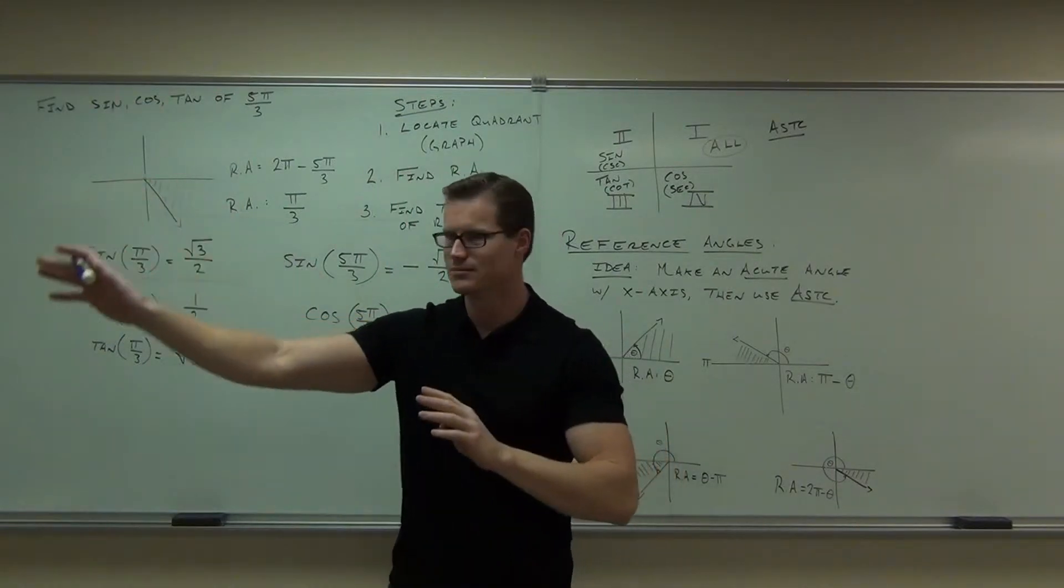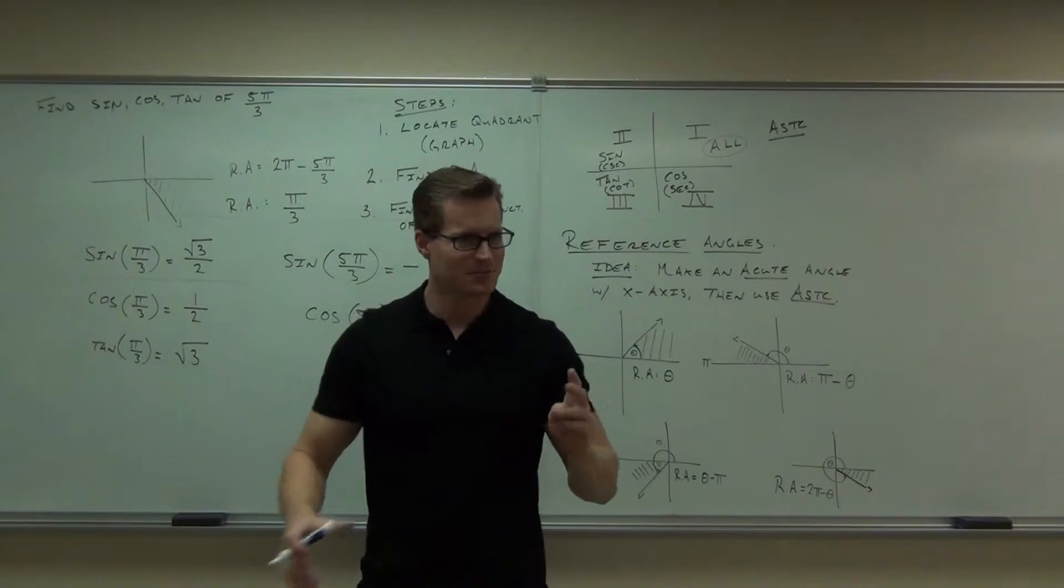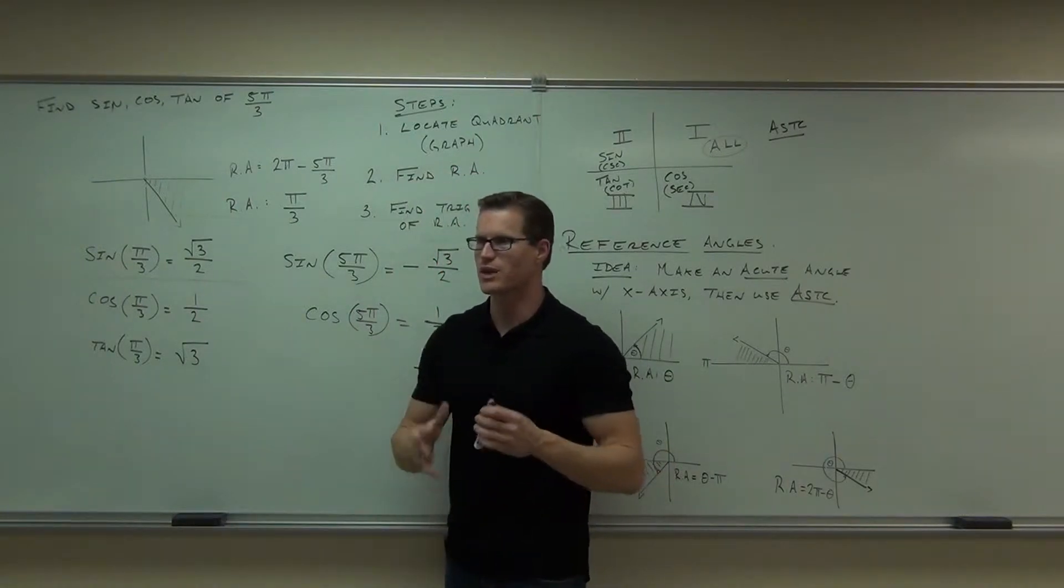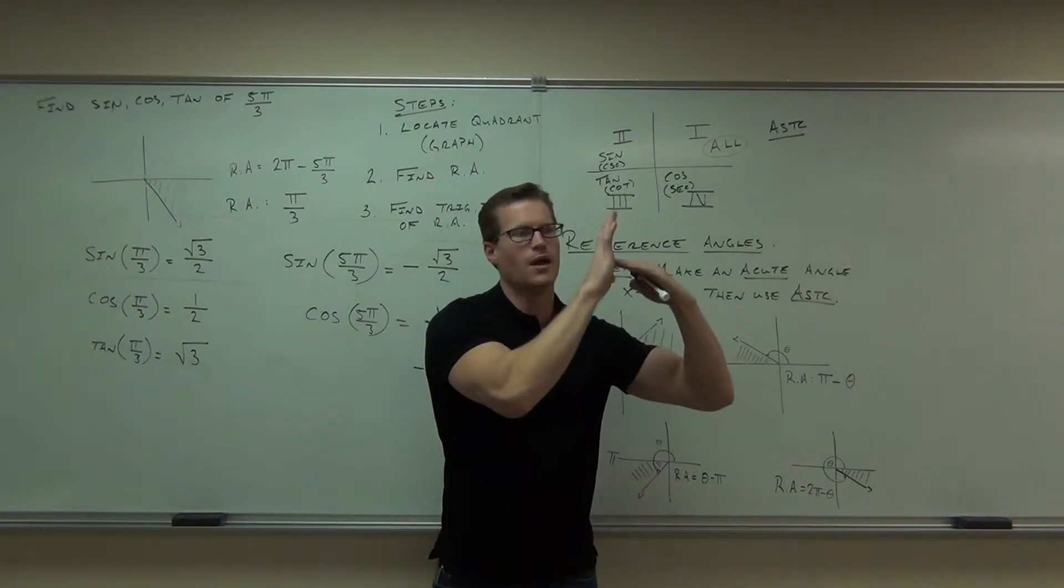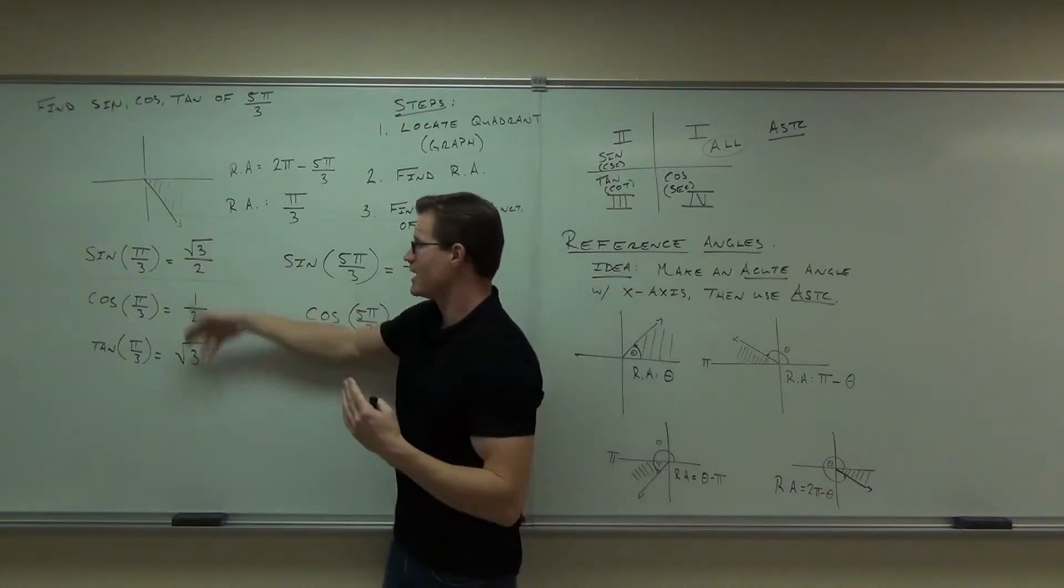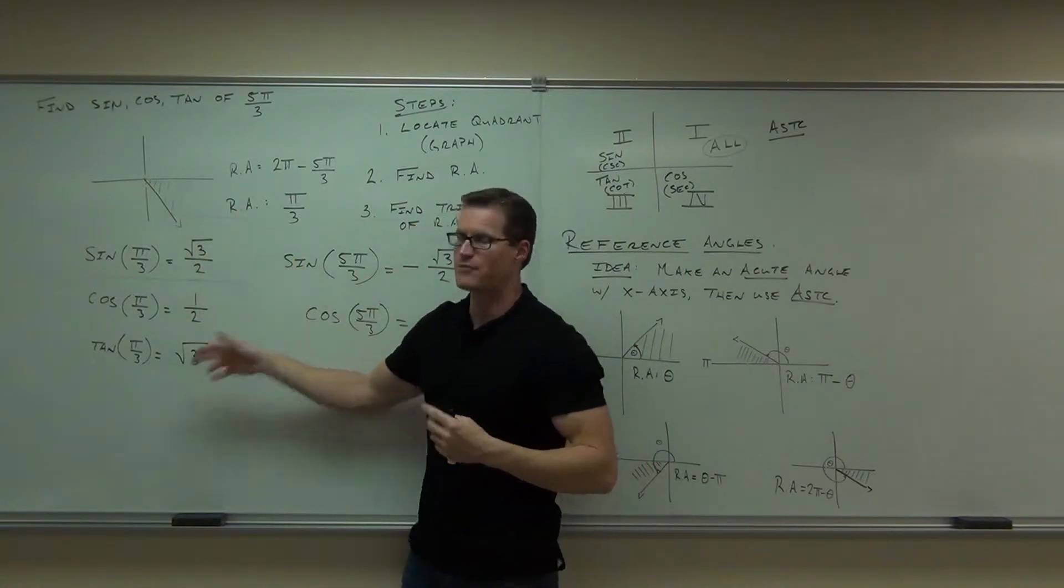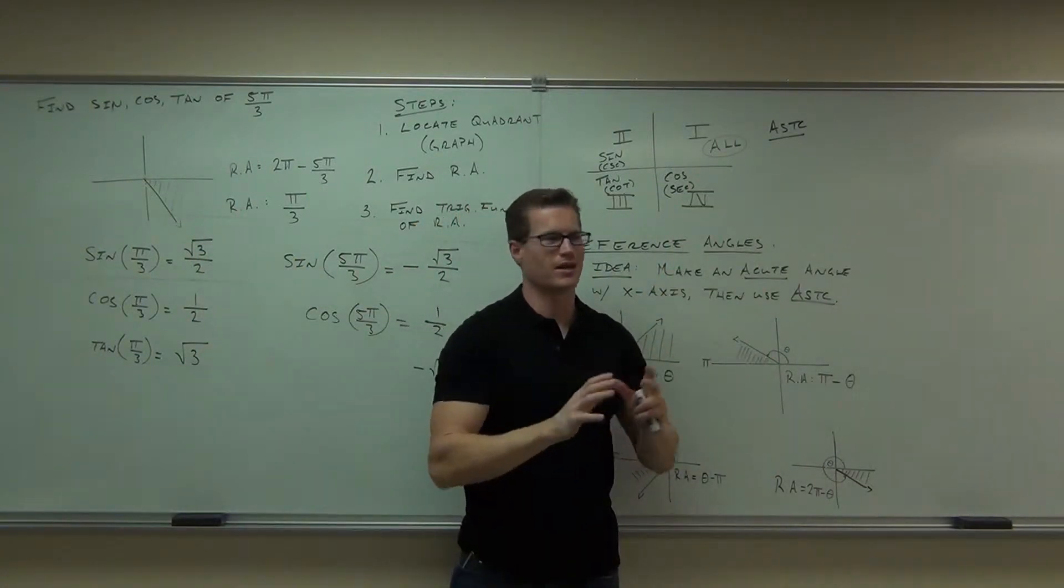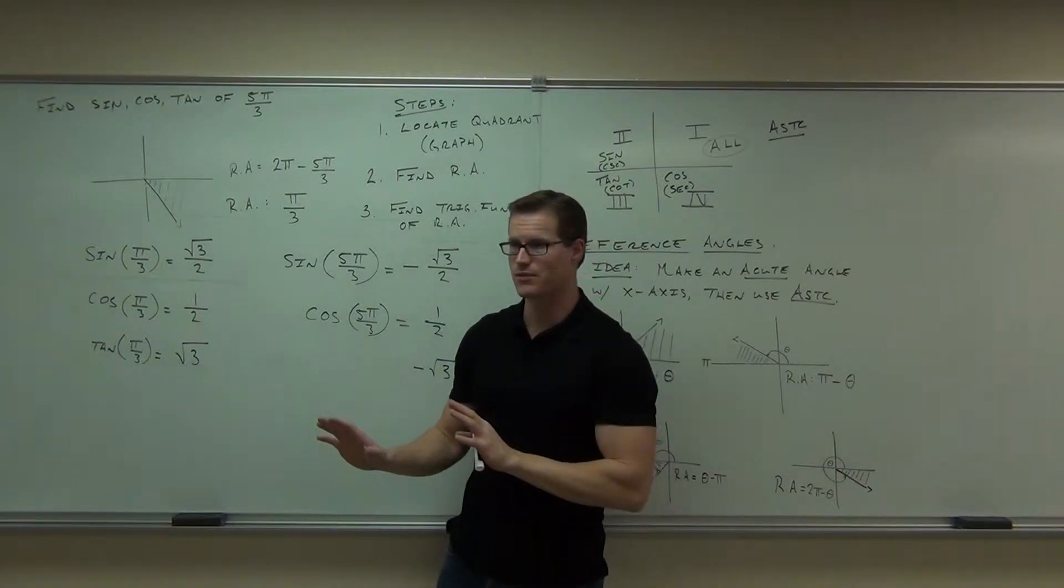Run from this trigonometry stuff. If you're doing a reference angle, it's all based on quadrant 1. That means every number you're going to get is positive. That's why you have to use ASTC to find out whether or not it's actually negative. Do you see the difference there?